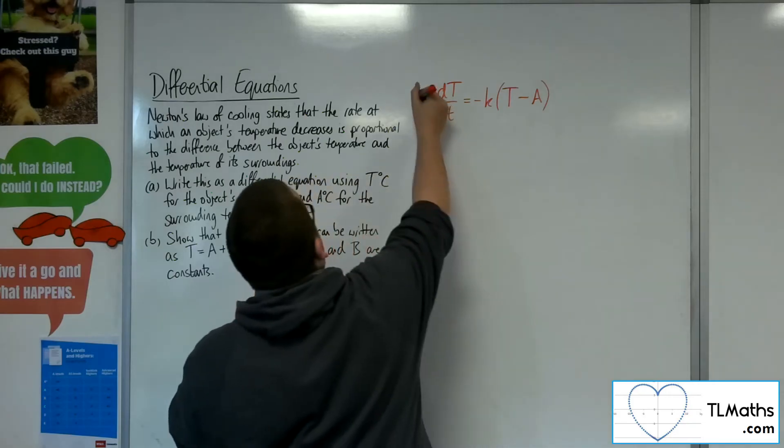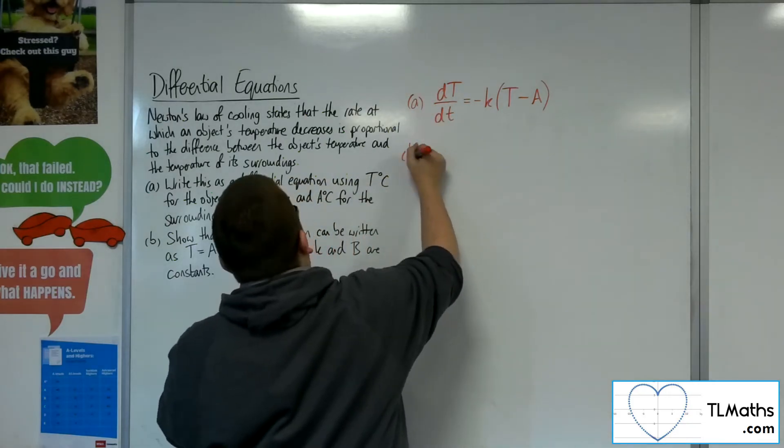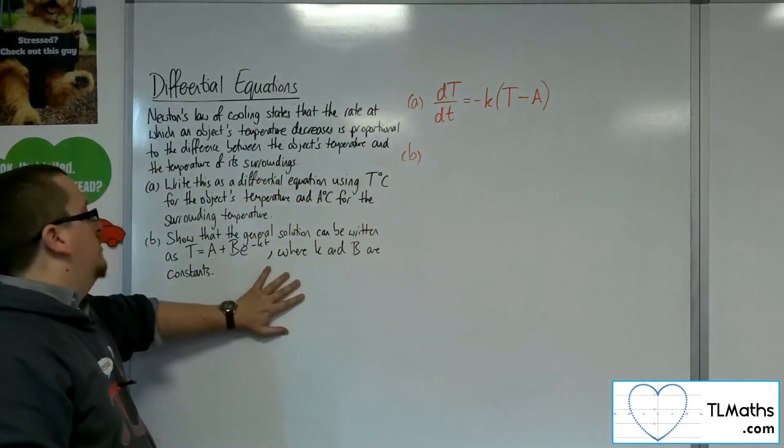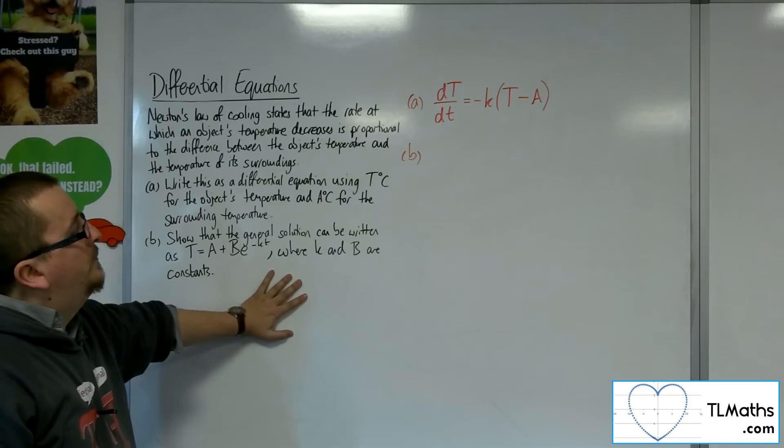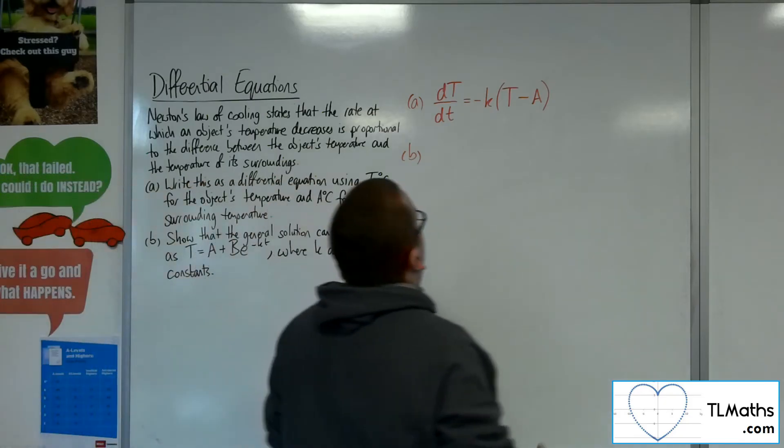So that's part A. Part B. Show that the general solution could be written as T equals A plus B times e to the minus KT, where K and B are constants. Okay, so how do I do this?